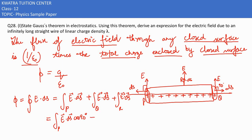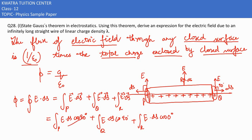Expanding E·dS for surface P gives E·dS·cos90° = 0. The same applies for surface Q: E·dS·cos90° = 0. For surface R, the angle is 0 degrees since E and dS are in the same direction, so cos0° = 1. The cos90° terms vanish, and only the R part survives.